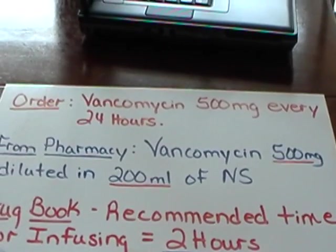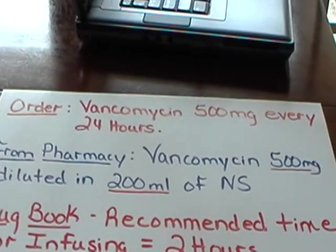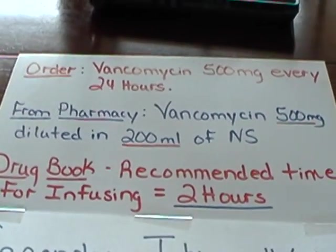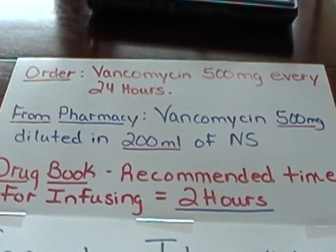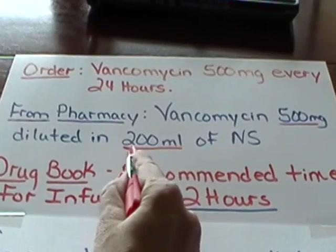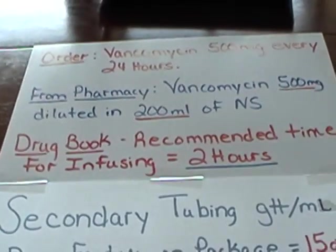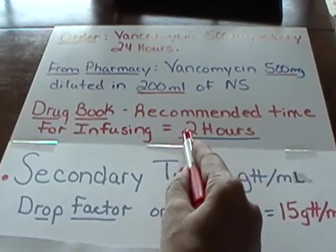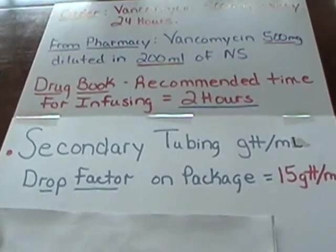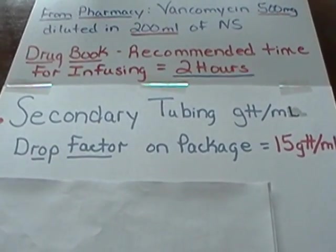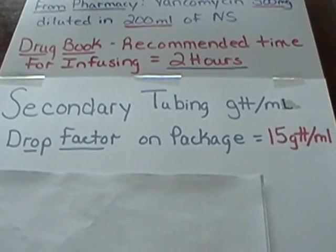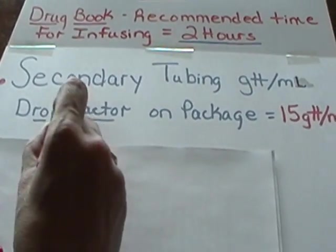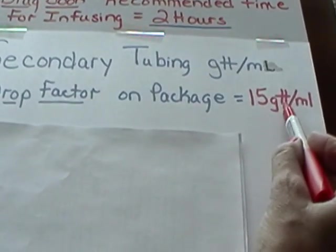Now let's work a problem and solve for drops per minute. We have an order: give vancomycin 500 milligrams every 24 hours. From pharmacy we have vancomycin 500 milligrams diluted in 200 milliliters of normal saline — that 200 milliliters will be our volume. Checking the drug book, the recommended infusion time is two hours. We get our secondary tubing package and the drop factor is 15 drops per milliliter.